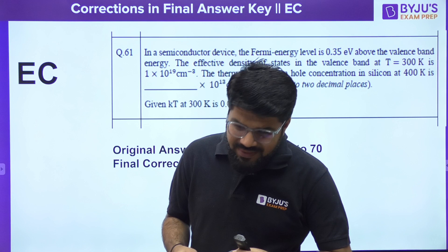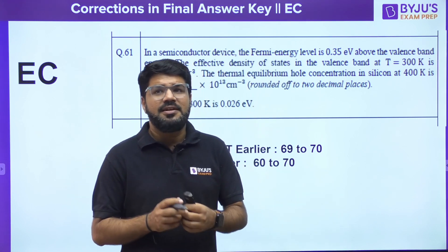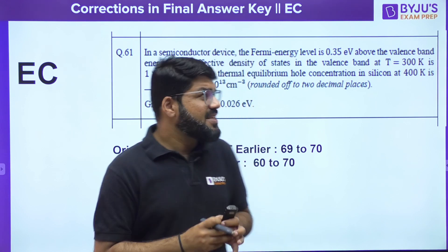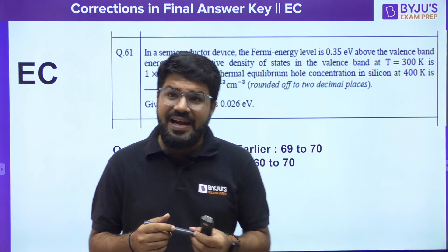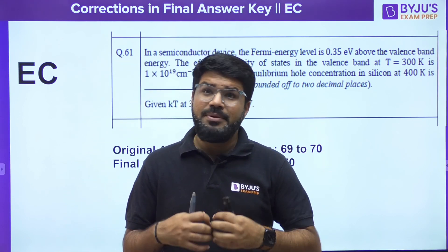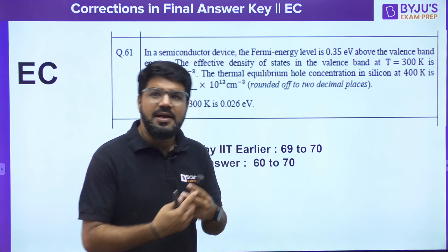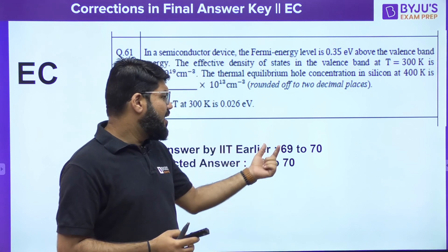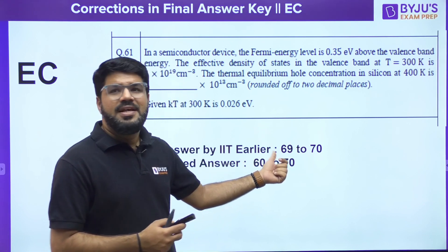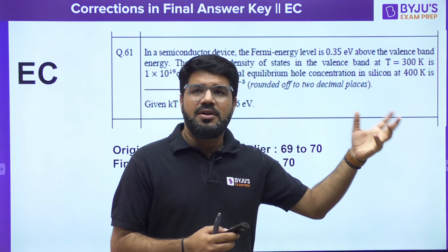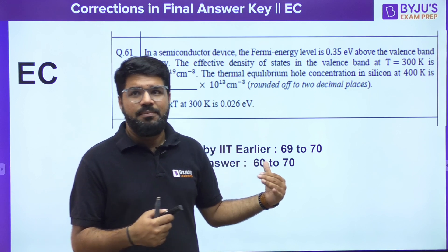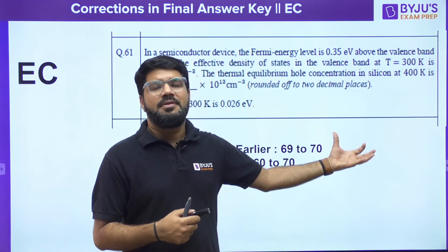The next question is from EDC. If you consider all temperature effects, you get something around 69-point-something, but since temperature effects are not mentioned in the question, a student solving under ideal conditions gets around 63-point-something. Both conditions have been explained by Sanjay Rathi sir. The answer range given by IIT has been expanded — earlier it was 69 to 70, now it is 60 to 70 — so whether your answer was 63 or 69, both are given correct marks.